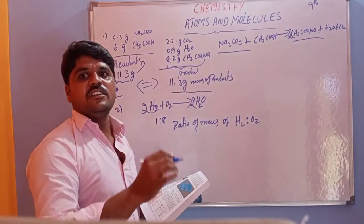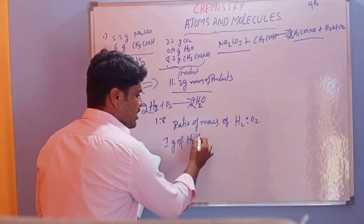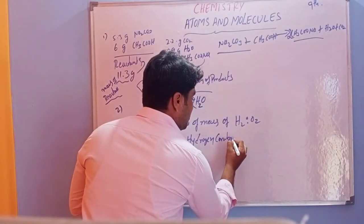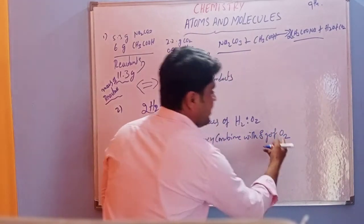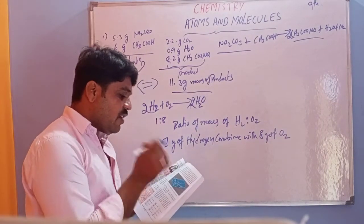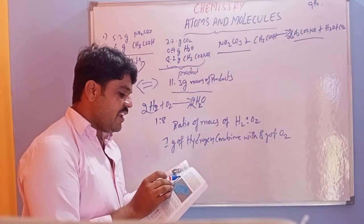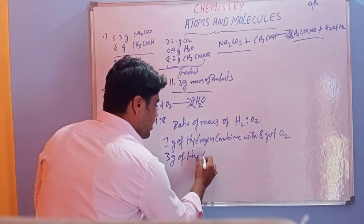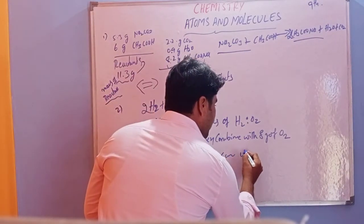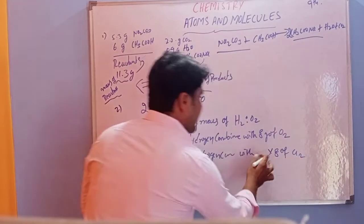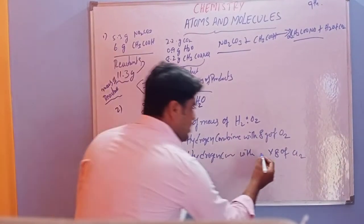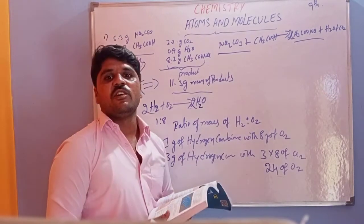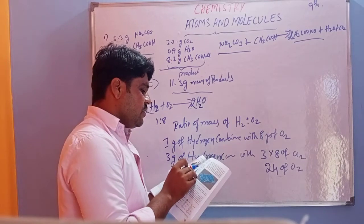They ask: what mass of oxygen gas would be required to react completely with 3 grams of hydrogen? Instead of 1 gram we have 3 grams of hydrogen. Since 1 gram of hydrogen combines with 8 grams of oxygen, 3 grams of hydrogen combines with 3 × 8 = 24 grams of oxygen. So 24 grams of oxygen is required.